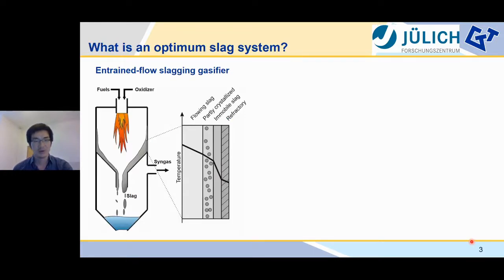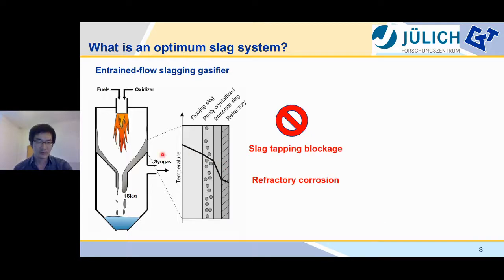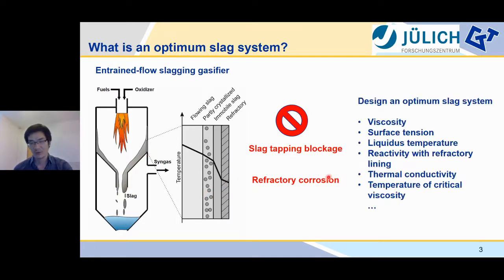Let's look at what is an optimum slag system in entrained flow gasification. Normally, entrained flow gasification is a high-temperature, high-pressure process. Concerning the slag-related issues, we need to consider two aspects. First, we need to make sure the slag is smoothly discharged from the reactor. On the other hand, we need to minimize the refractory corrosion by molten slags. For this purpose, we need to consider thermophysical and chemical properties, for example viscosity, surface tension, and so on and so forth.